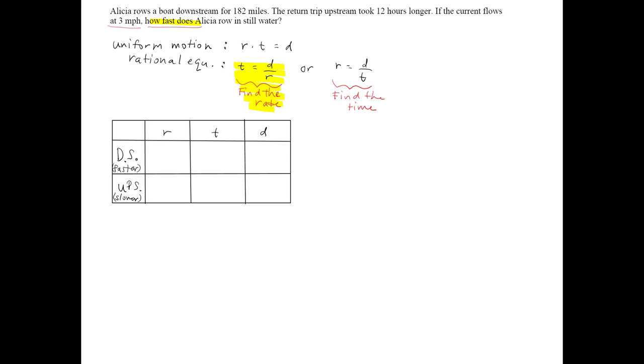Alright, let's go ahead and look at our parameters. For downstream, the boat traveled 182 miles, so there's the distance. We do not know the rate in which Alicia rowed in still water, but we do know that the current was 3 miles per hour. That means whatever the rate was in still water, she was going a little faster, in fact 3 miles per hour faster. And the time t is t.